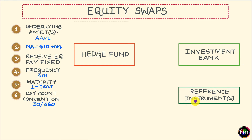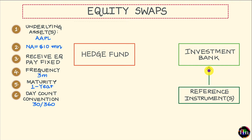These shares of Apple belong to the investment bank. This long position in the shares of Apple is a position which will sit on the balance sheet of this investment bank, and going forward, this position becomes the source of periodic returns which can then be transferred over to the hedge fund via the equity swap.